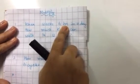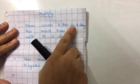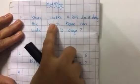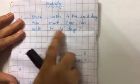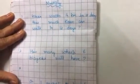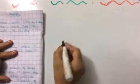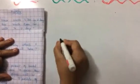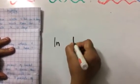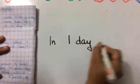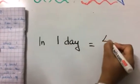It is very important what we are doing word problems because isi se hum joh hum ne seekha hai multiplication, addition, subtraction usko hum apply kar sakte hain. Humko samaj aega. So let's start. Kiran walks 4 kilometers in a day. How much Kiran can walk in 12 days?